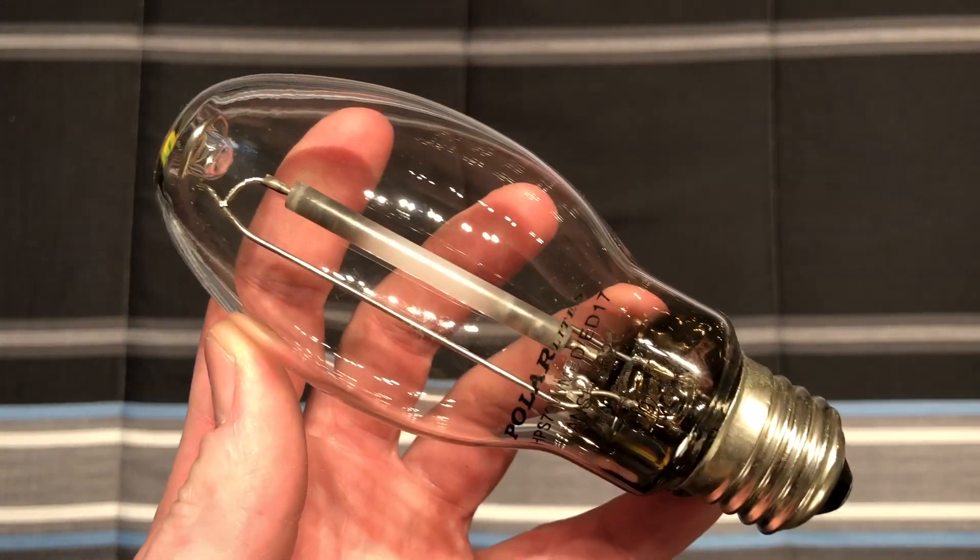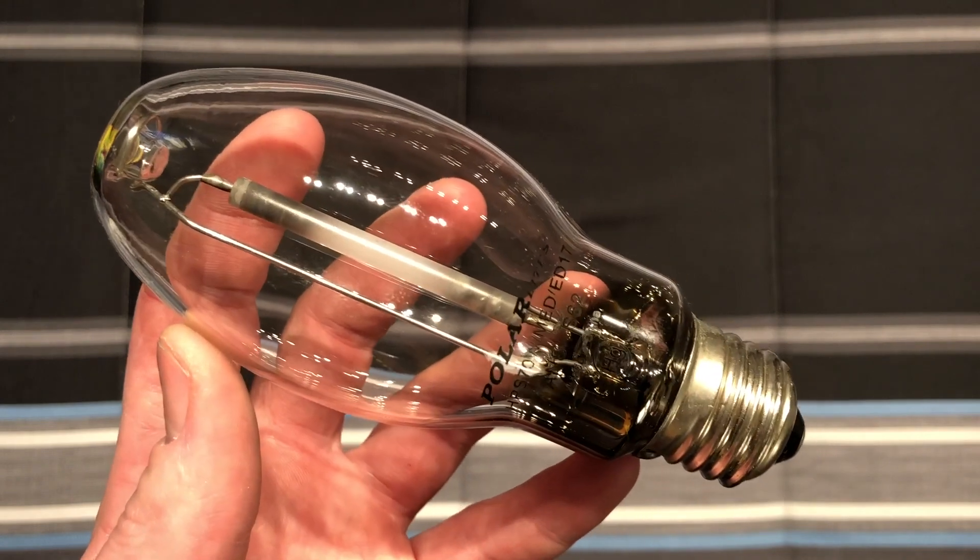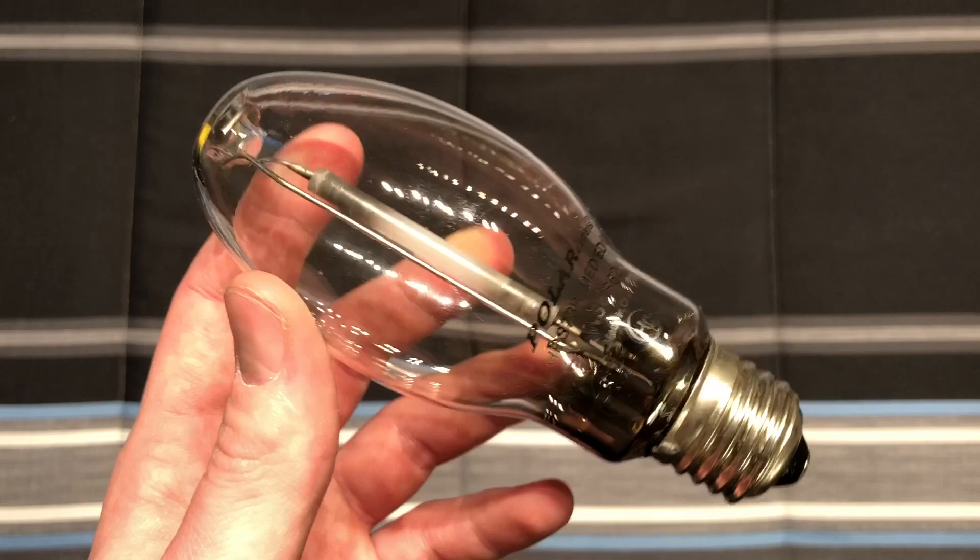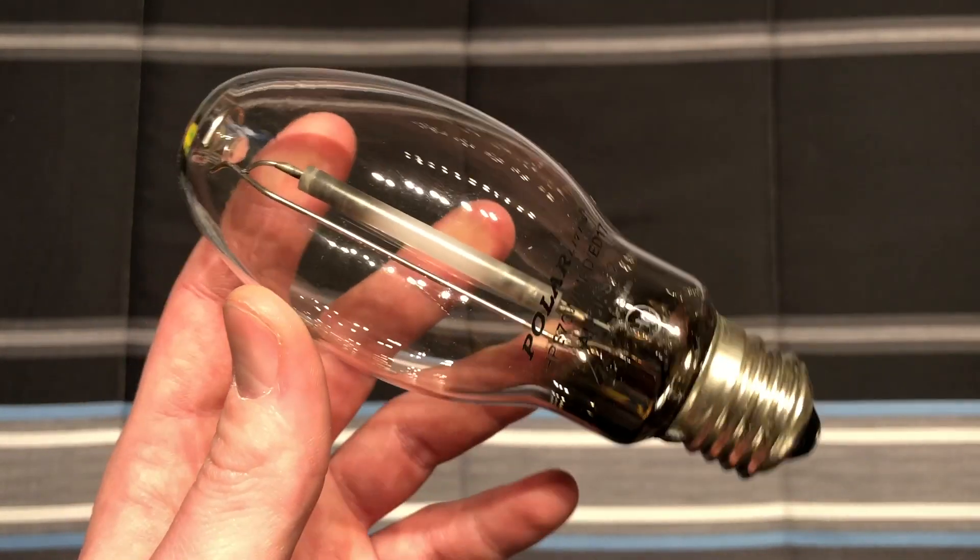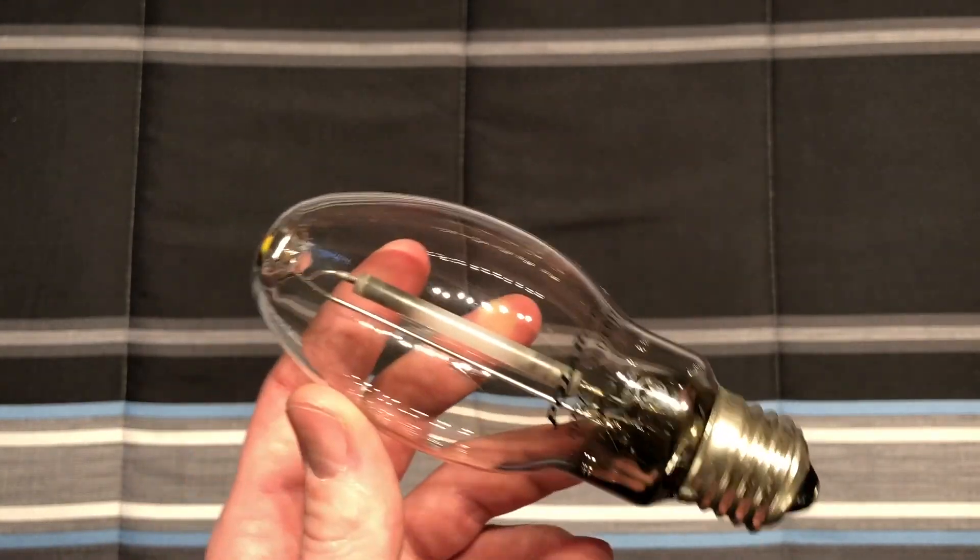Now this particular bulb came with a fixture, it was a Designer's Edge 70 watt high-pressure sodium area light, which I have since converted to, I believe, mogul based, so it's no longer medium based because I think the medium-based area lights look ridiculous with such a tiny bulb in such a big refractor.